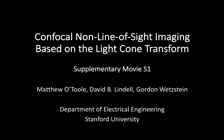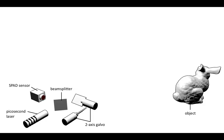This supplementary video provides an overview of confocal non-line-of-sight imaging. LIDAR systems are used in numerous applications to capture the 3D shape and albedo of objects. They work by sending a pulse of light to a target and measuring the time required for that light to return to a sensor.